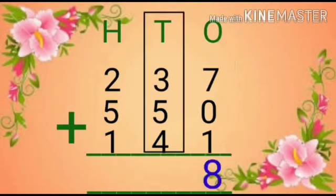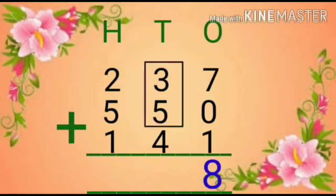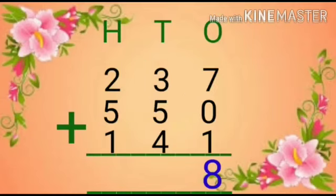Now we will move to ten's place. Here again there are three digits: 3, 5, and 4. First we will add 3 and 5. Three in my mind and five fingers up. After three: four, five, six, seven, eight. Eight will come.